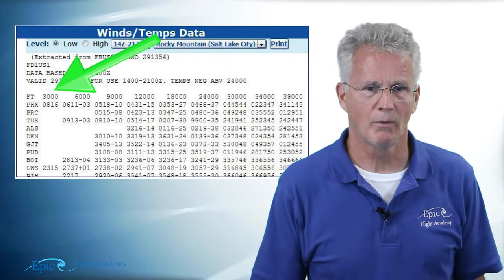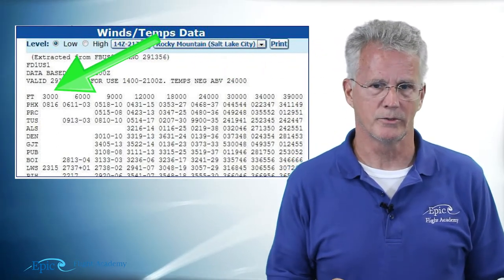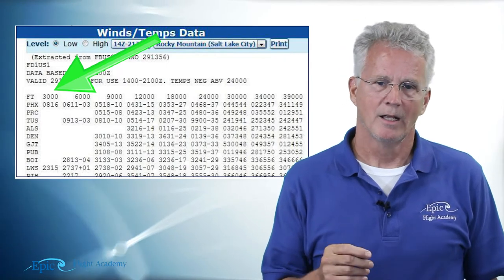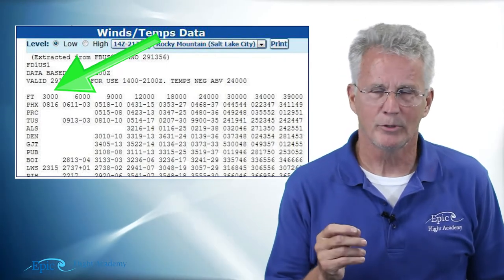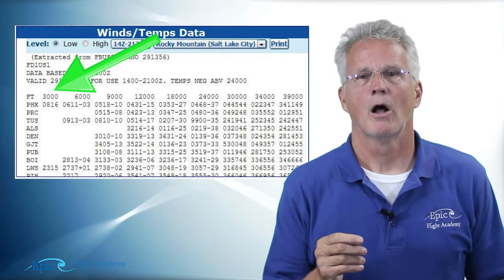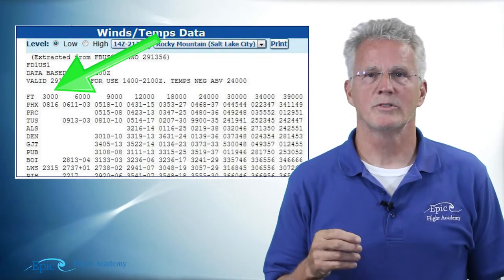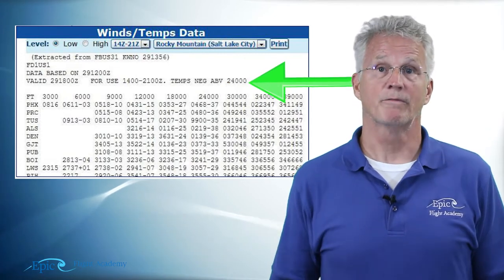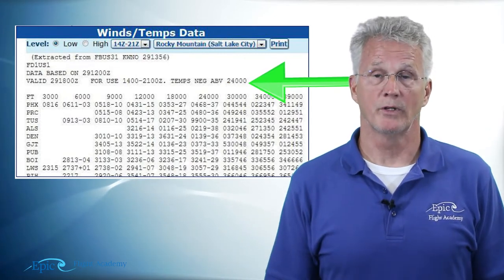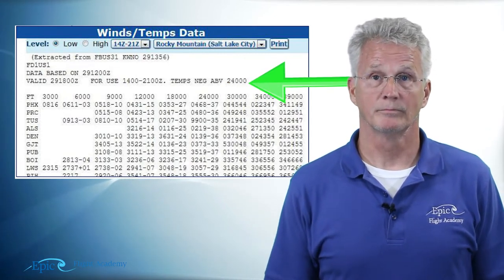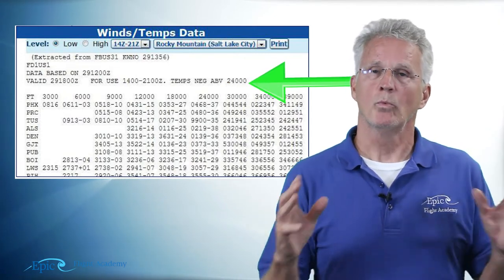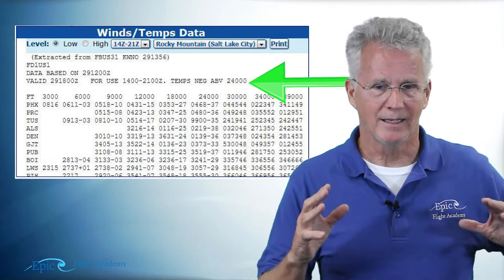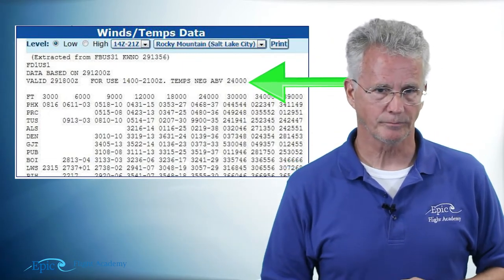The next thing to notice is that temperatures are always negative above 24,000 feet. With that information in hand, let's dive into this chart.